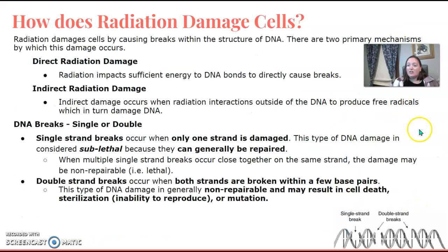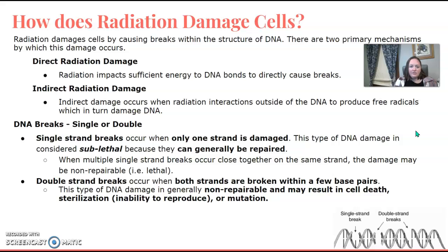How does radiation damage cells? It's either going to be direct radiation damage or indirect. Direct is a direct hit to the DNA, while indirect interacts outside the DNA first and produces a free radical. DNA breaks can be single strand or double strand. A single strand break only damages one strand — it's not as lethal and can generally be repaired. The double strand break is worse and most of the time non-repairable, and can result in cell death, sterilization, or mutation.